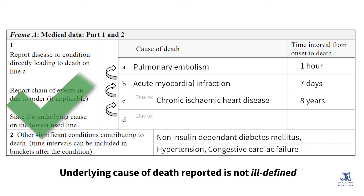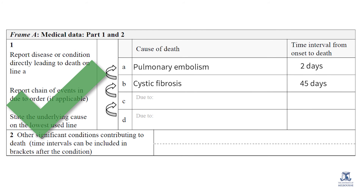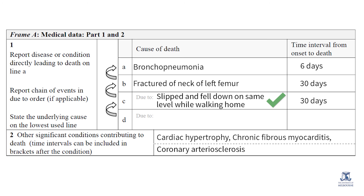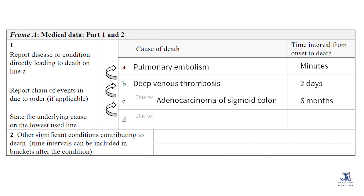Double-check and ensure that the underlying cause reported is not an ill-defined cause. Always ask whether the underlying cause of death recorded could be a result of another condition — if so, look for evidence of the originating cause. It's also important to check that the recorded underlying cause is not a mode of dying, not a symptom or sign, or not an intermediate or unspecified cause. If the death is due to an accident, violence or poisoning, the circumstance of the accident or violence will be regarded as the underlying cause. Additional information such as the place of occurrence, the victim's activity and intent should always be included. When the underlying cause is a neoplasm, remember to mention details about the site, behaviour and the morphology.